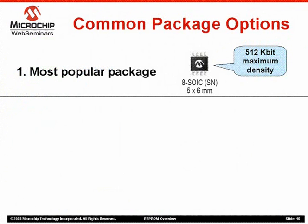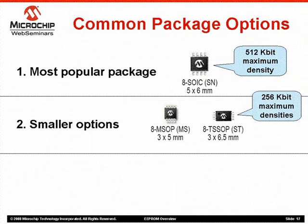This slide shows some of the more common EEPROM packages. All package photos are correctly scaled relative to each other. Under each package is its name and its footprint dimensions, as well as the maximum density that can fit into each package. The most popular package is the 8-lead SOIC, which has a 5x6 mm footprint and can hold up to 512 kbits. The TSSOP and MSOP packages are also popular, smaller and thinner than the SOIC, and each can hold up to 256 kbits.